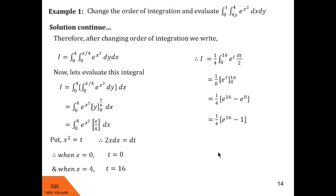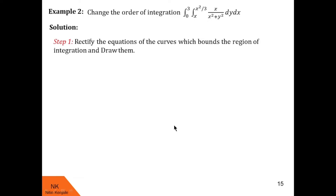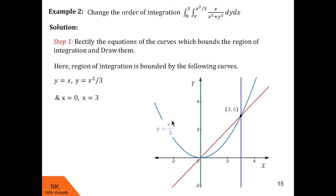I hope you understood this technique of changing order of integration. Let us move to the second example. Here we are asked to change the order of the double integral of x/(x² + y²) dy dx, with inside integral limits x to x²/3 and outside integral limits 0 to 3. In step 1, the curves bounding the region are y = x, y = x²/3, x = 0, and x = 3. This is the parabola y = x²/3, this is the line y = x, this is the line x = 3, and this is x = 0. These curves bound the region of integration.